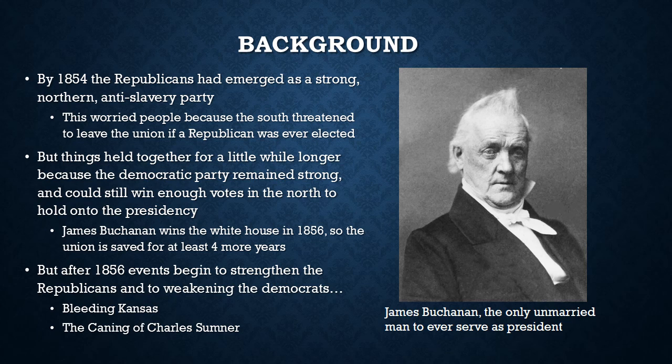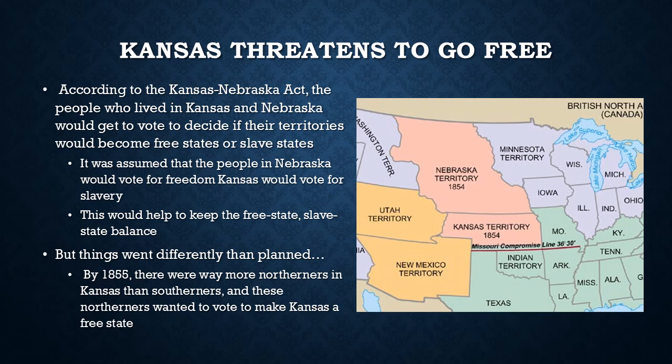After 1856, though, some events began to happen that weakened the Democrats and strengthened the Republicans. One is Bleeding Kansas, which we're going to talk about next, and also the caning of Charles Sumner, which kind of comes out of Bleeding Kansas. Let's talk about Kansas.